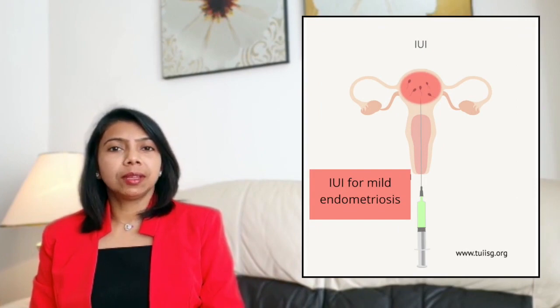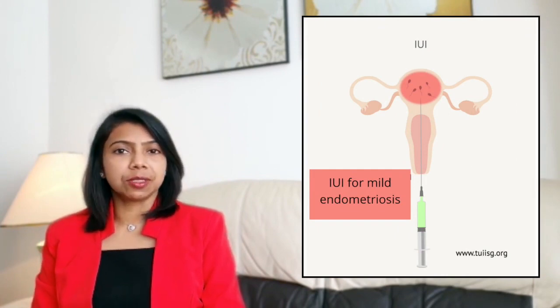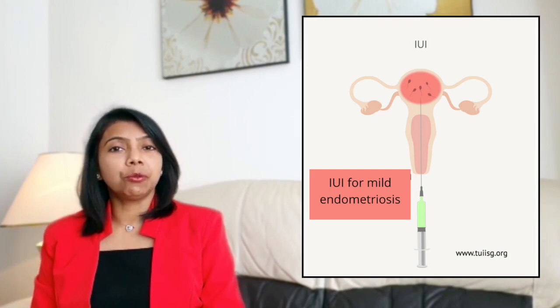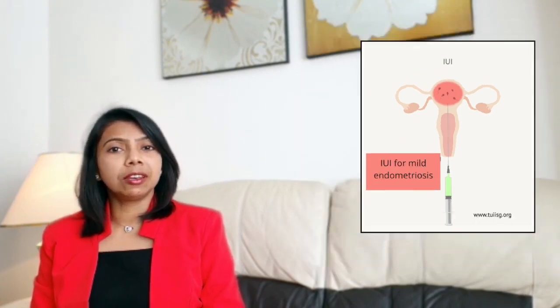IUI, or intrauterine insemination, is a treatment option for women with mild endometriosis and normal patent fallopian tubes. Your partner's sperm is prepared in the laboratory to get the most motile sperm and placed directly inside your uterus at the time of ovulation. It can be done in a natural cycle or with ovarian stimulation, and research has shown that IUI with ovarian stimulation has higher chances of success. IUI success rate is highest within six to nine months after endometriosis surgery. IVF is a better option for women with severe endometriosis with blocked tubes and those who have been trying for a long duration over three years, or women of advanced age.